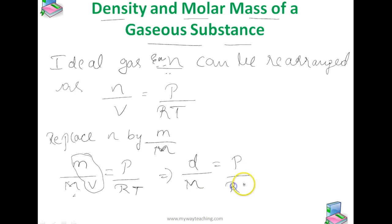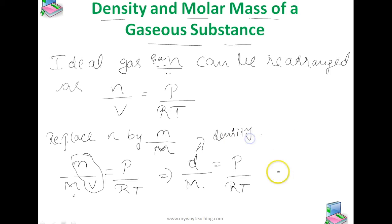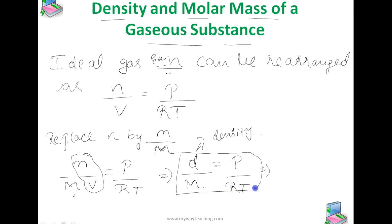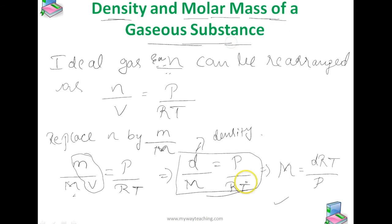Rearranging, where d is density, we get the relationship d divided by M equals P divided by RT. From this we can calculate the molar mass of a gas: M equals d times RT divided by P. This allows us to calculate both the density and the molar mass of a gaseous substance.